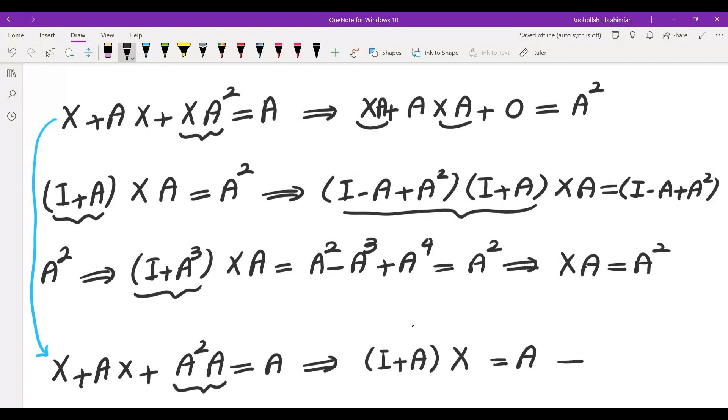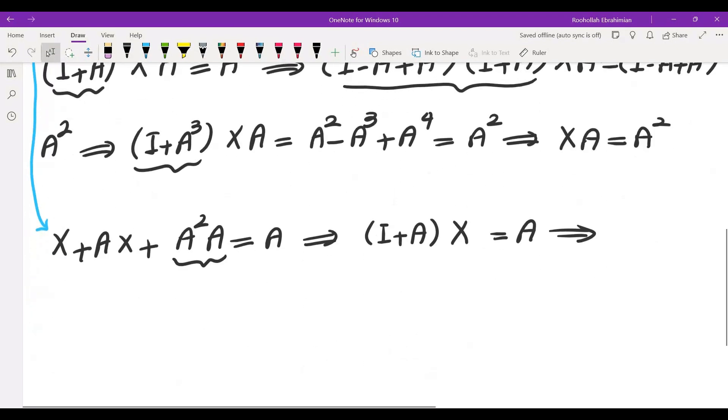Now we're going to do the same thing: multiply by the term I minus A plus A squared to get the sum of two cubes.